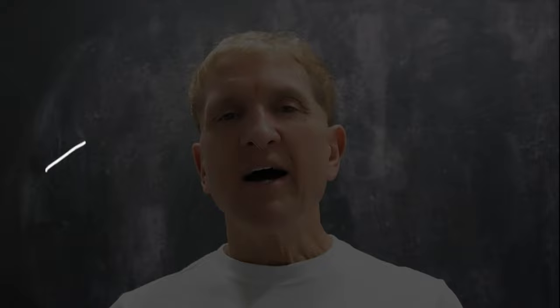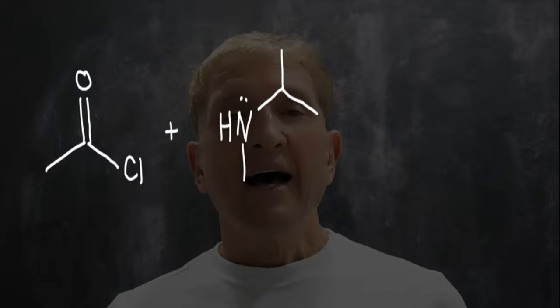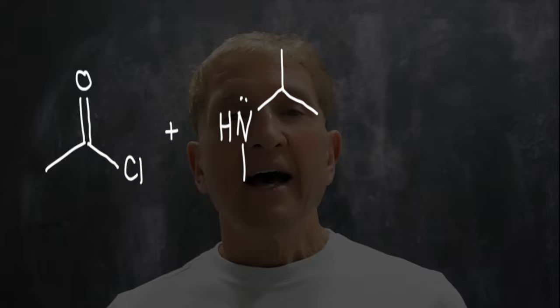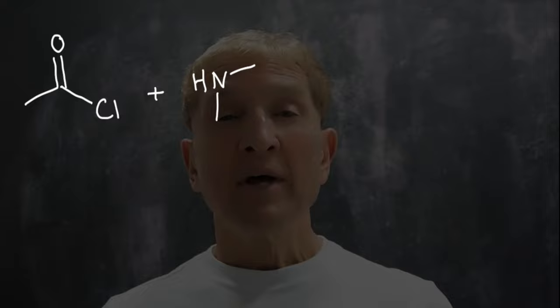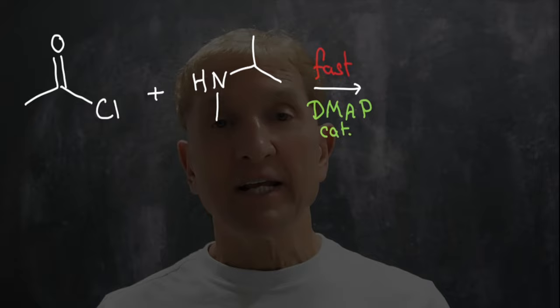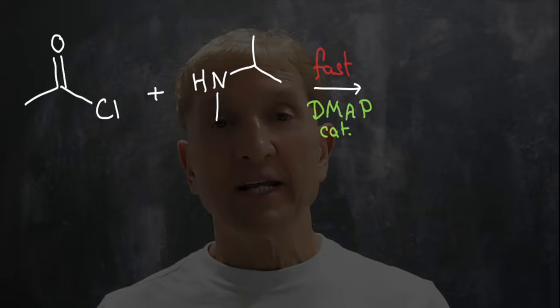Let me pose you another problem — quite a tricky one. If I add an acyl chloride, let's say I take ethanoyl chloride and react it with an amine — this is methyl isopropyl amine — the reaction is quite slow. But then if I try the reaction again and add just a little tiny bit of 4-dimethylaminopyridine, DMAP, as a catalyst, the reaction speeds up. Can you rationalize that?